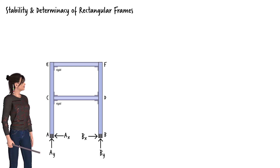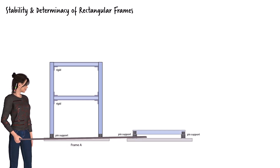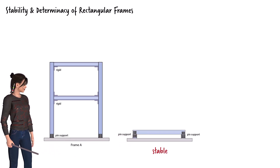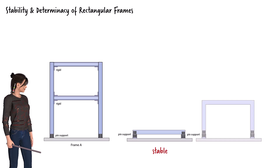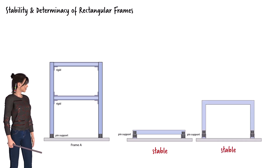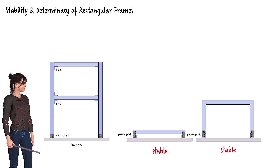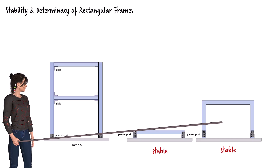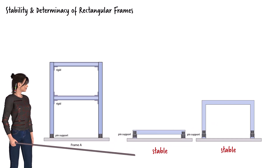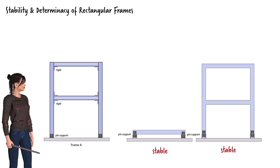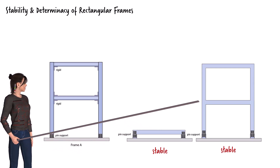Here's why. A beam resting on two pin supports is stable. If we make this beam into a rigid frame, the structure stays stable. Bending the beam to form a frame doesn't make it unstable, as long as the joints stay rigid. So this is a stable configuration. Adding another level to the frame does not change the stability condition, so this frame is also stable.